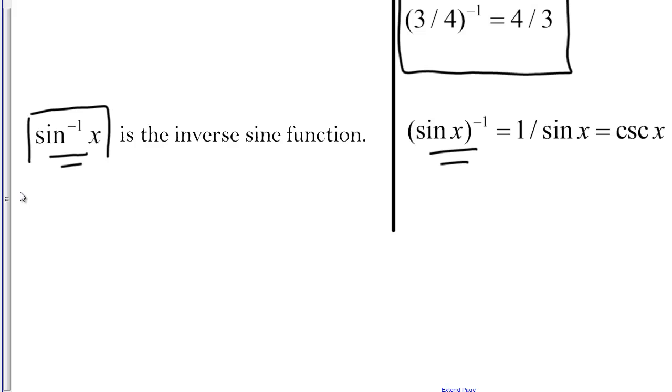But then if you've got the sine X, the quantity sine X to the negative one, that represents sine X to the negative one power, which is the reciprocal one over sine X which has its own identity, the cosecant X. So just make sure you understand those differences in notation conventions and that you use them when applicable.